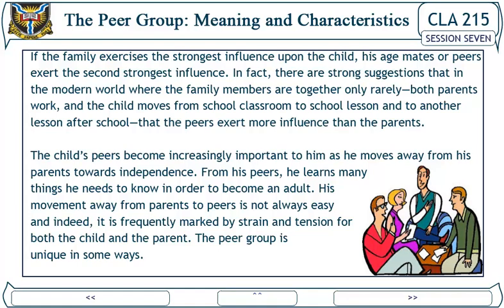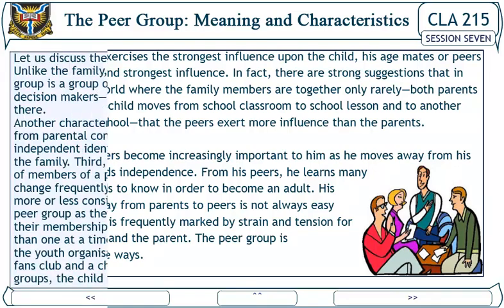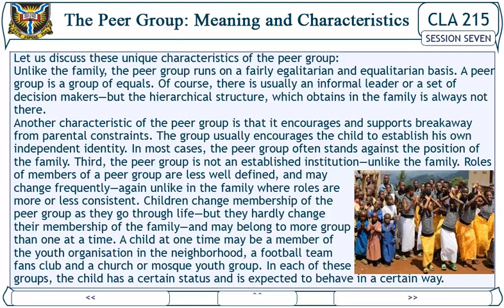The peer group is unique in some ways. Let us discuss these unique characteristics of the peer group. Unlike the family, the peer group runs on a fairly egalitarian and equalitarian basis — a peer group is a group of equals. Of course, there is usually an informal leader or a set of decision makers, but the hierarchical structure which obtains in the family is not always present.